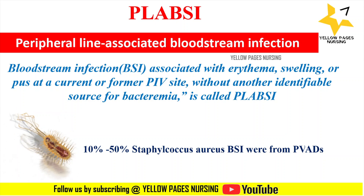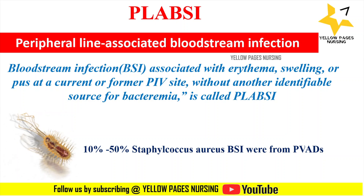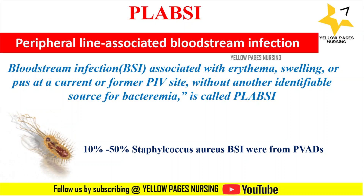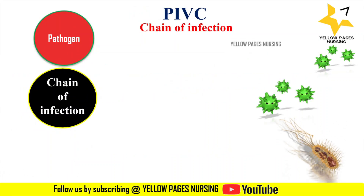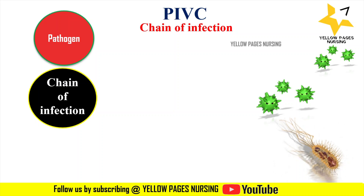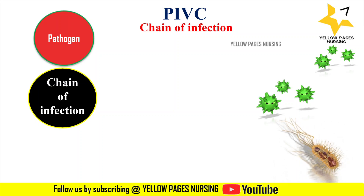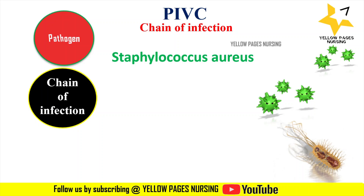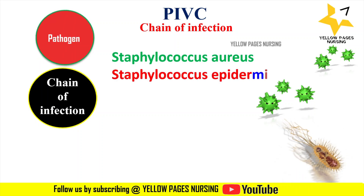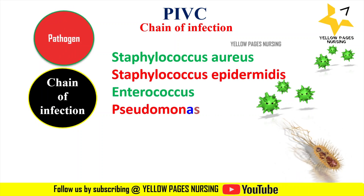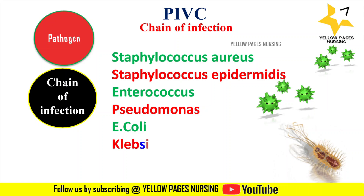To understand PLABSI in detail, you should know about the chain of infection. First comes pathogens. The common pathogens responsible for this are Staphylococcus aureus, Staphylococcus epidermidis, Enterococcus, Pseudomonas, E. coli, Klebsiella, and Candida.